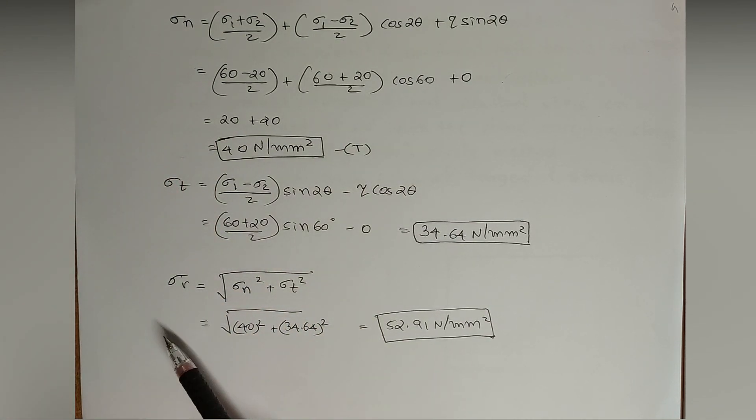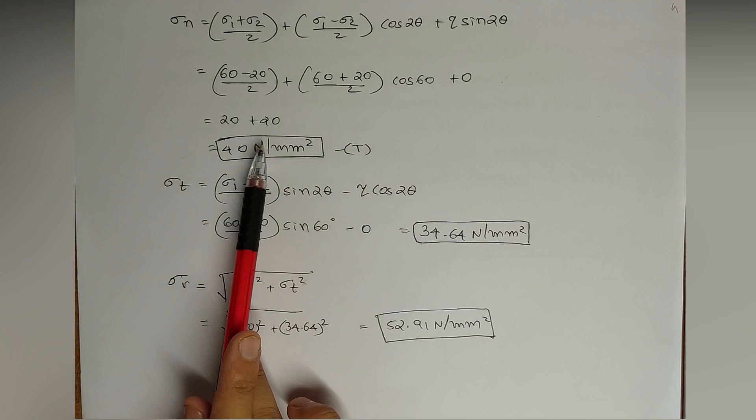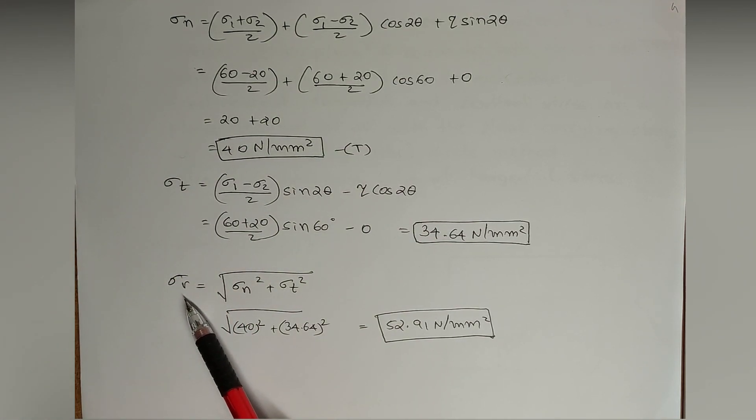The remaining is the resultant of both. Resultant stress: under root of sigma_n square plus sigma_t square. So the answer is 52.91 Newton per mm square. In this way, based on our equations sigma_n, sigma_t, and sigma_r, we have calculated.